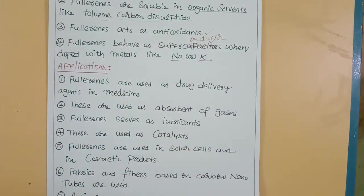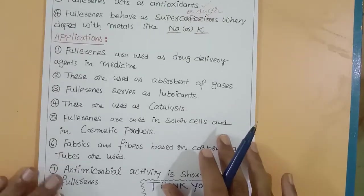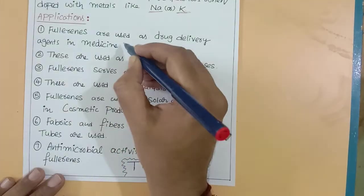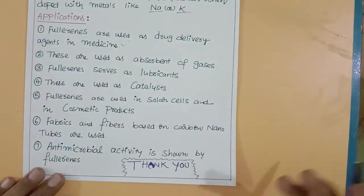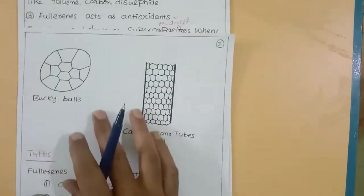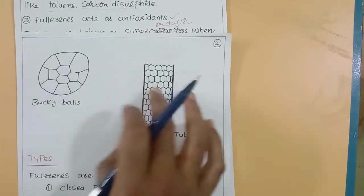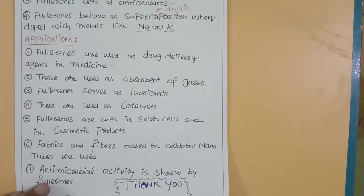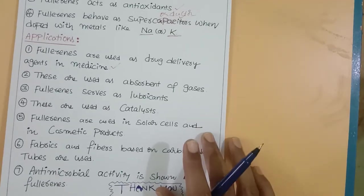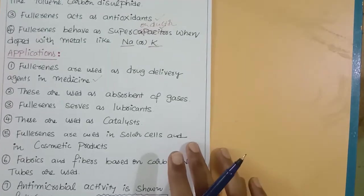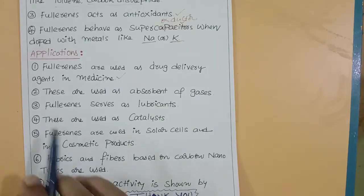Applications: Fullerenes are mainly used as drug delivery agents in medicine. Inside fullerenes there is empty space, a hollow region. In this empty space we can add and encapsulate drugs. When these drugs reach patients, the drug is released only at the target location. So we use fullerenes as drug delivery agents in medicine.